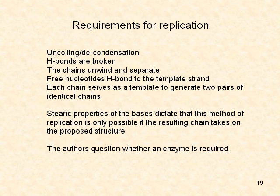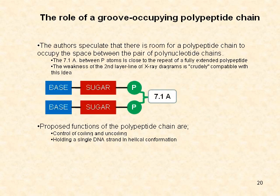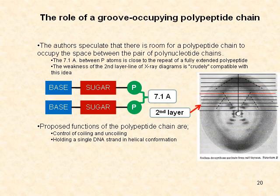They are also curious whether an enzyme is required for this process. The authors speculate that there is room for a polypeptide chain to occupy the space between the pair of polynucleotide chains, based on two observations. First, the 7.1-angstrom distance between phosphorus atoms is close to the repeat of a fully extended polypeptide. Second, the weakness of the second layer line of the axial diagram is crudely compatible with this idea. The proposed functions of the polypeptide chain are to control coiling and uncoiling of helical structures and how a single DNA strand can hold its helical information.